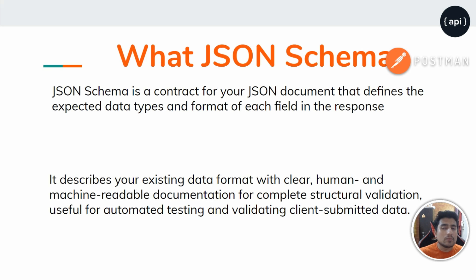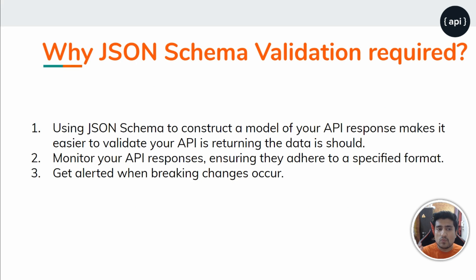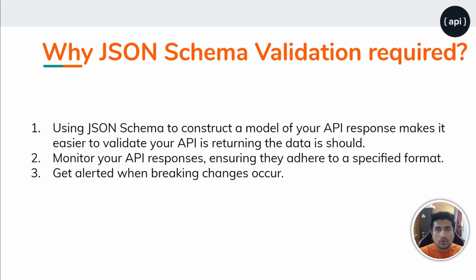Why is JSON schema validation required? We can monitor API responses and ensure that the format we're getting is the same as the expected one. For example, if you have a JSON response for user data, you can create a JSON schema and validate every time that the keys in the response haven't changed. Using JSON schema, you construct a model of your API response and make it easier to validate that your API is returning the correct data.